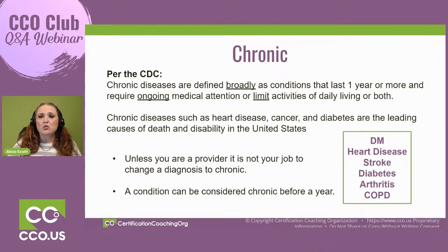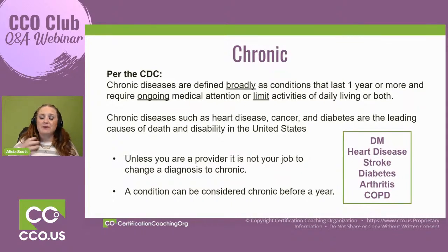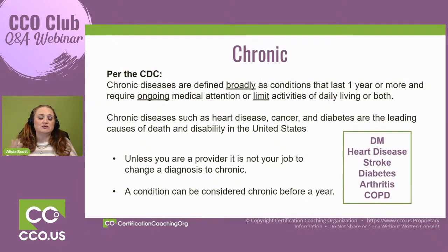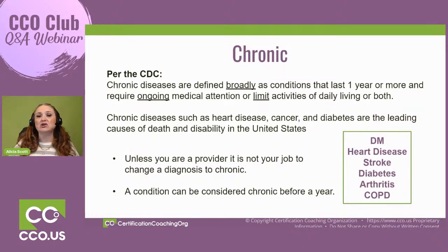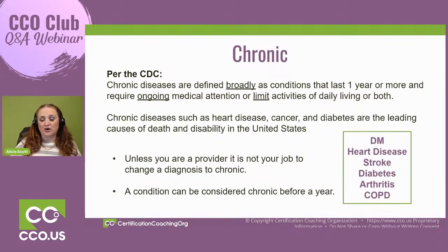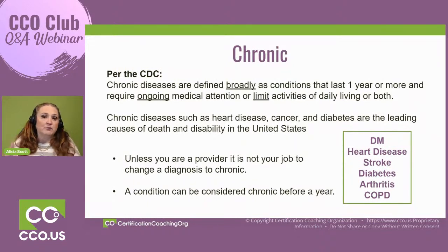When we look at documentation, we cannot assume something is chronic unless the provider states that it's chronic, especially when you have codes for acute and chronic. We know the difference between acute and chronic — acute is sudden onset and chronic will be something that usually lasts longer. But just because it doesn't last a year, that is not the defining number. They've had this for 12 months exactly, so now it's considered chronic? No, that's not the case.